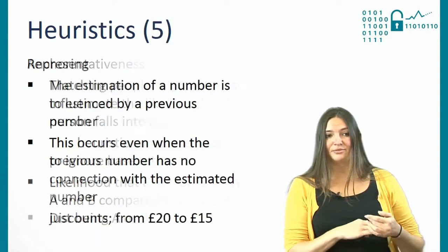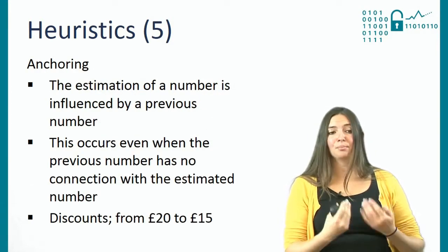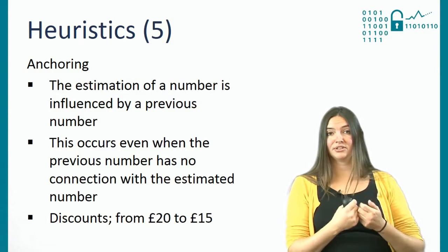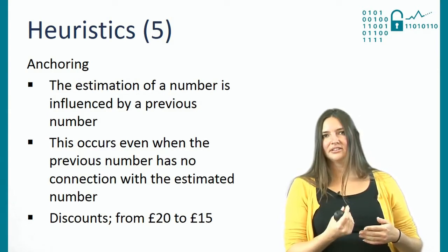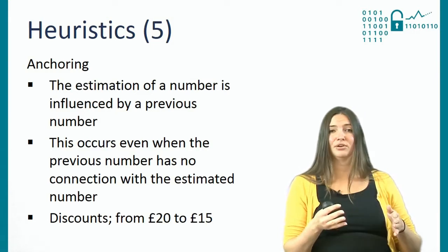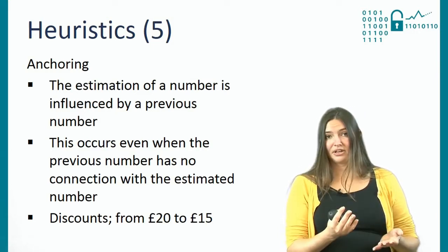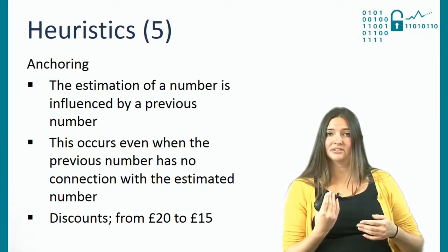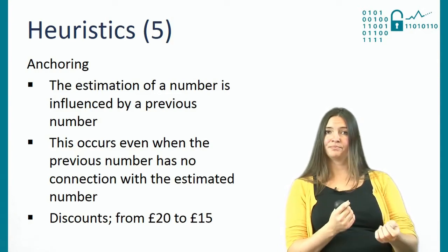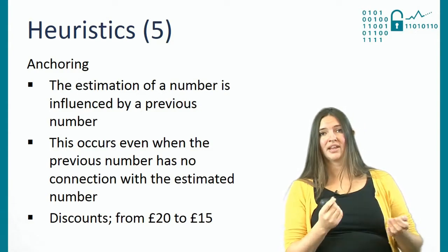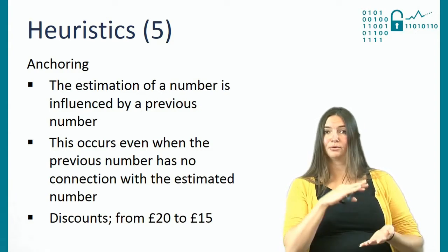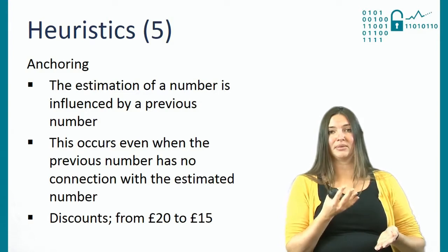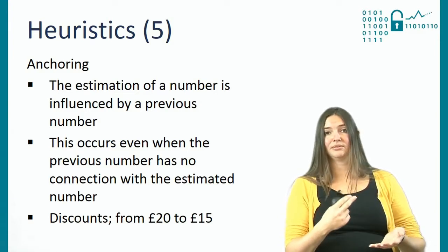The last heuristic is anchoring, which has to do with estimating numbers. When you estimate a number, it's actually being influenced by previous numbers you have encountered — and interestingly, this even occurs when the previous number has nothing to do with the number you now have to estimate. For example, if I ask you to guess what percentage of women work in computer science, and before answering I give you a book and ask how many pages it has — people given a thick book will actually estimate that more women work in computer science than people given a thin book.